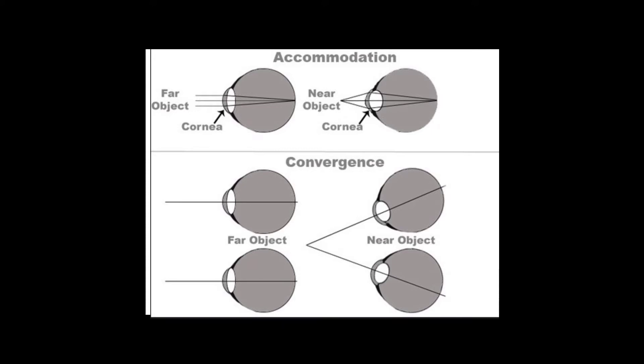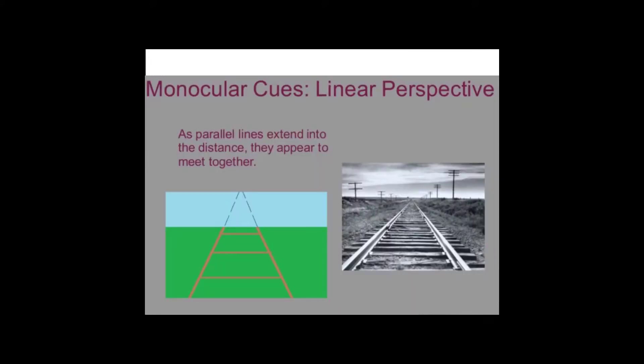Monocular cues may involve motion parallax, having images of objects at different distances moving across the retina at different rates, as well as feeling the accommodation or change in the shape of the lens as the eye focuses.